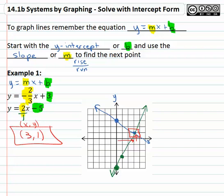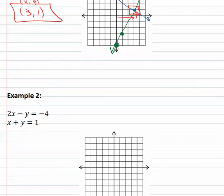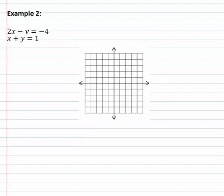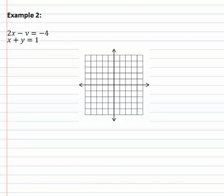Let's take a look at another example where we graph the equations in order to find the solutions. Here we have two x minus y equals negative four and x plus y equals one.